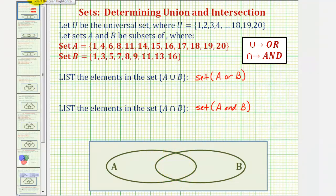Let's begin by finding the elements that are in both set A and B. Notice the elements one, eight, eleven, and sixteen are the only elements that are in both set A and set B.